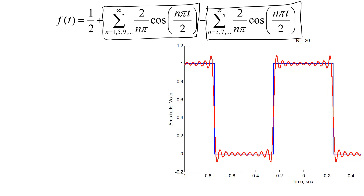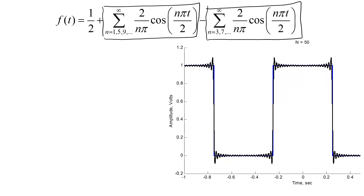This is what happens when I include 20 terms. The oscillations are getting smaller, and the Fourier series looks a lot more like the original function. Now let's look at using 50 terms. That's getting close, but this pesky difference between the two functions here at the edge of the square wave doesn't seem to go away.